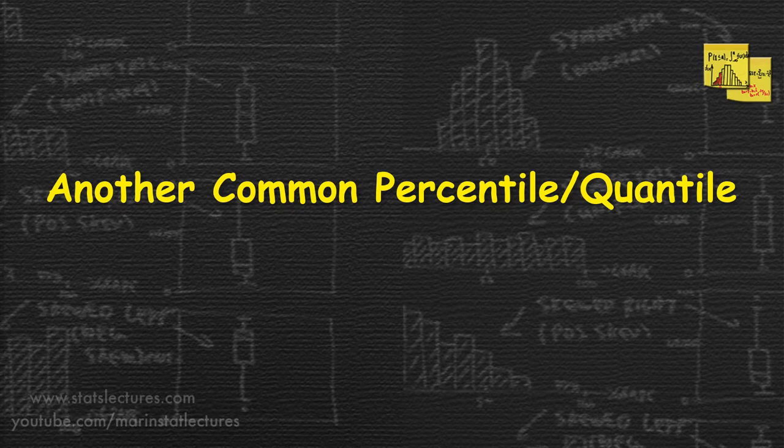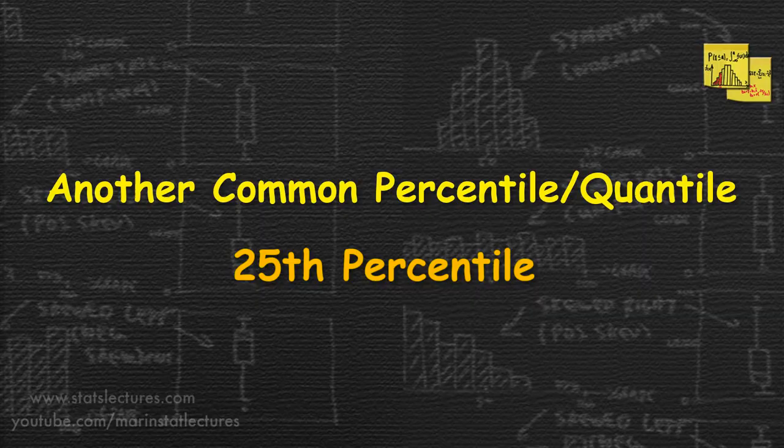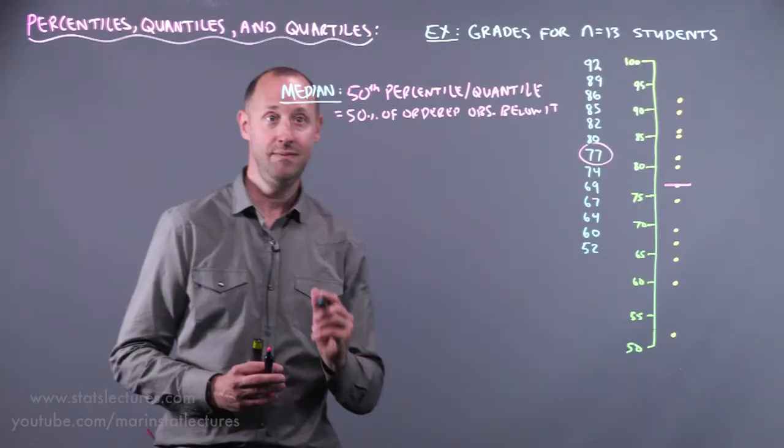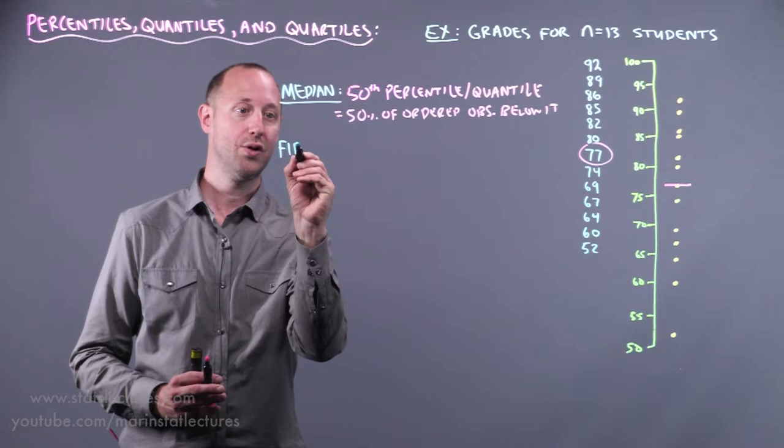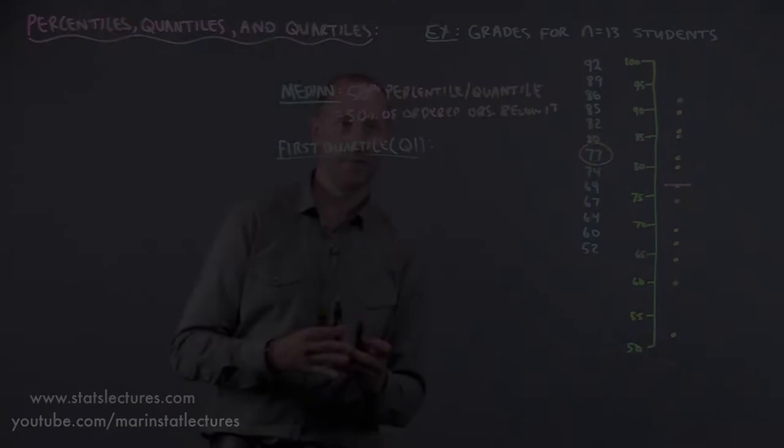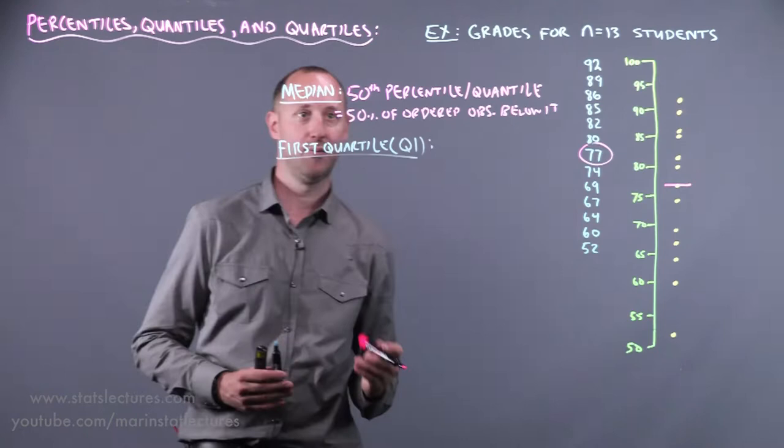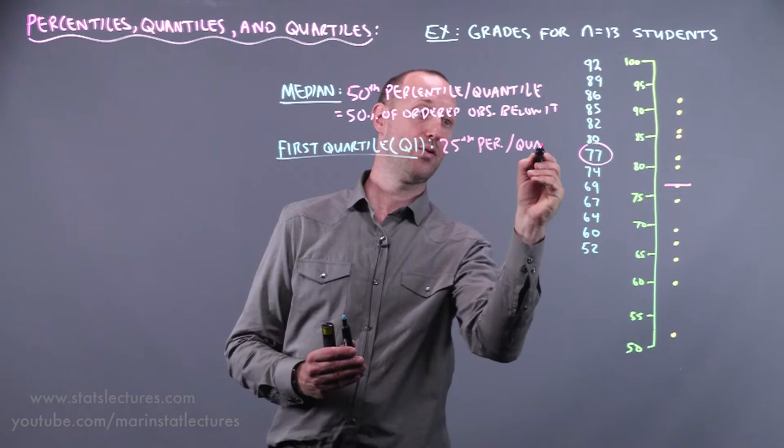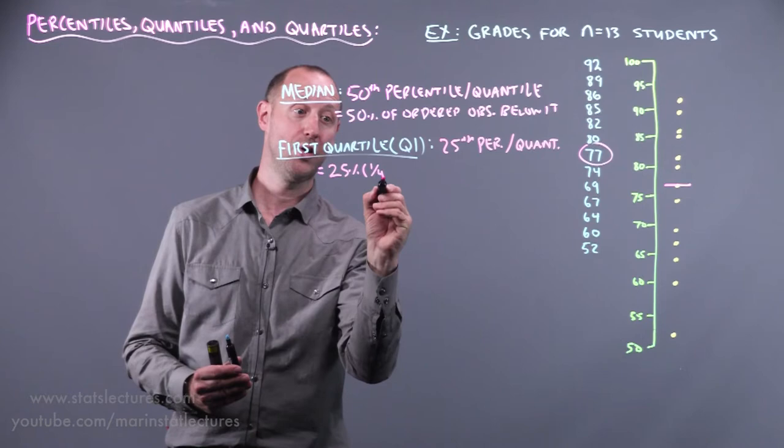Now let's talk about another commonly looked at percentile or quantile, the 25th percentile. And this again gets its own special name. It gets called the first quartile or abbreviated Q1. And what this is? Well, it's the 25th percentile or the 25th quantile. And what that means is it has 25% or one quarter of observations below it.